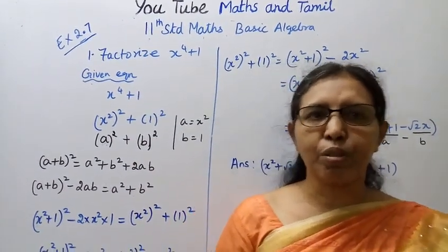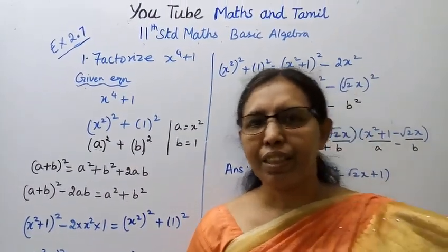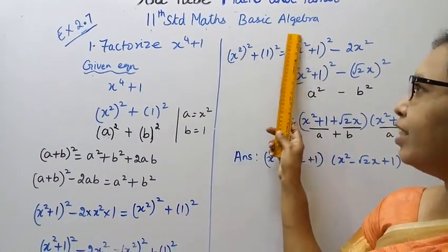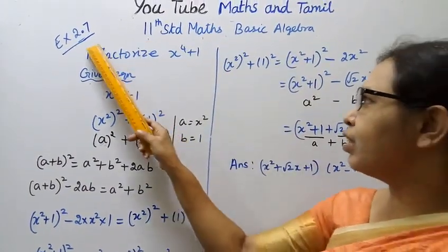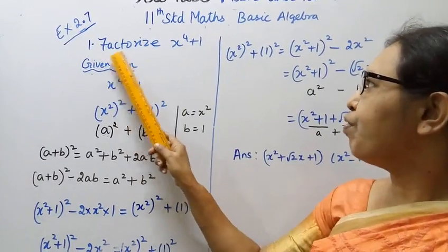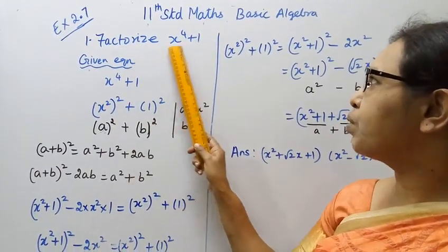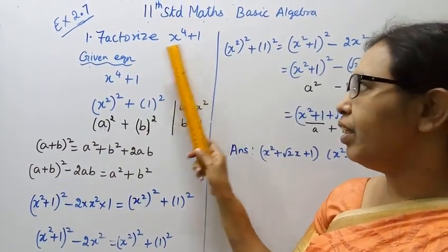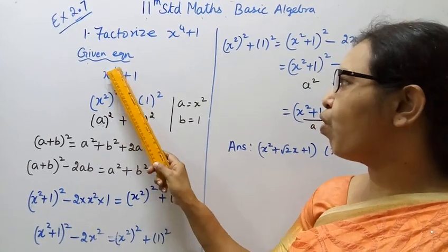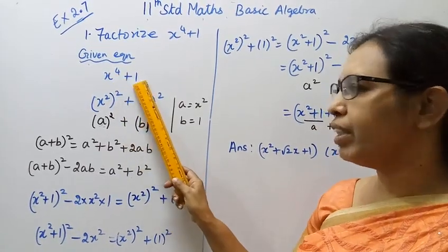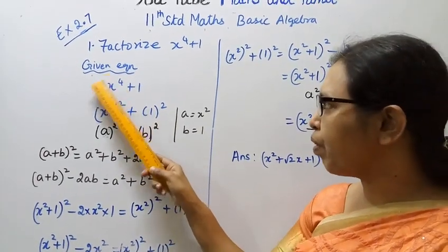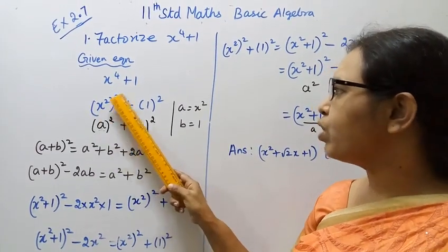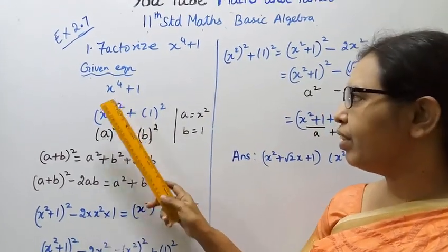Hello students, welcome to Max and Tumble channel. 11th standard Max Basic Algebra, Exercise 2.7. The first problem: factor x⁴ + 1. Given equation x⁴ + 1. x⁴ is (x²)² — x power 4 is x square the whole square.